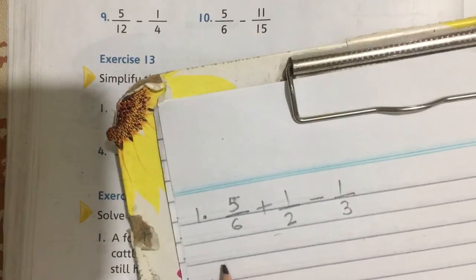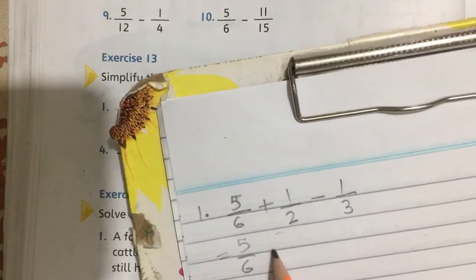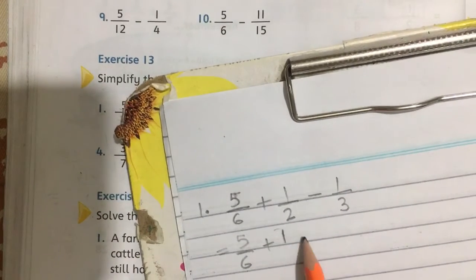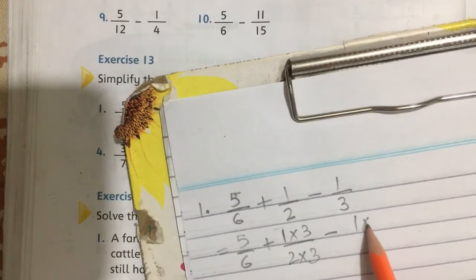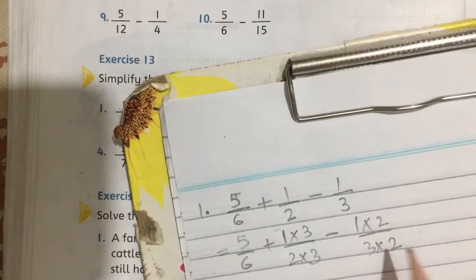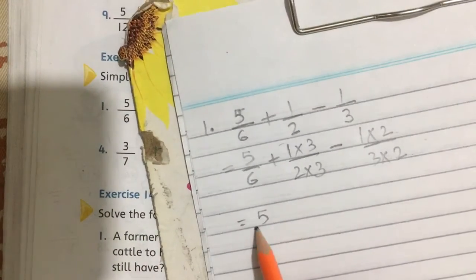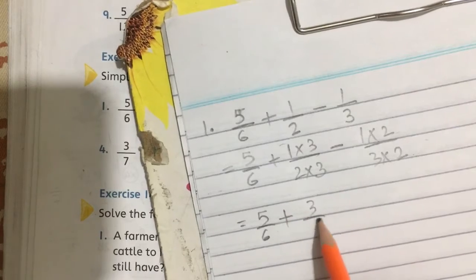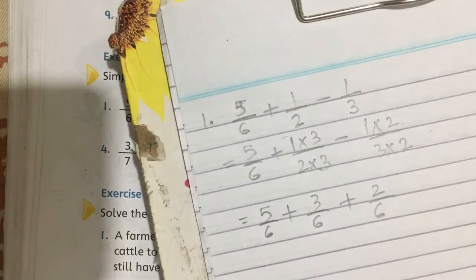Now what we will do is make denominators equal to LCM for the entire fraction. This is 5 by 6 plus 1 multiply by 3, 2 multiply by 3 is equal to 6, minus 1 multiply by 2, 3 multiply by 2 is equal to 6.